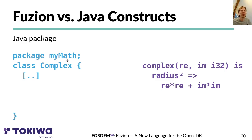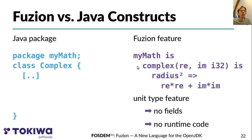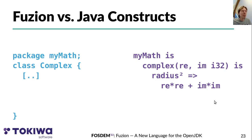Java packages in Fusion are also implemented using Fusion features. To model the effect of a package, you use a so-called unit type feature — a feature that has no fields, so no data is stored in instances of, say, 'my_math'. This means no memory is required to store instances of this feature, and there's no runtime code generated for calls to it. Unit type features are used in many contexts in Fusion, which is why I'm introducing them in a bit more detail here.